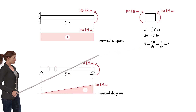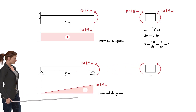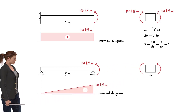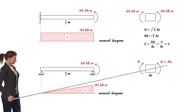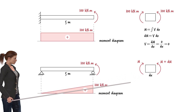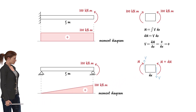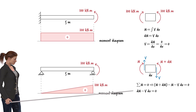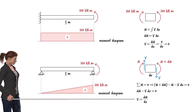Now consider a slice of this beam. Let dx represent the width of the segment. If we refer to the change in the bending moment in the segment as dm, to maintain static equilibrium a shear force must exist such that the total moment acting on the segment equals zero. This equation also shows that the shear force V is equal to dm/dx.